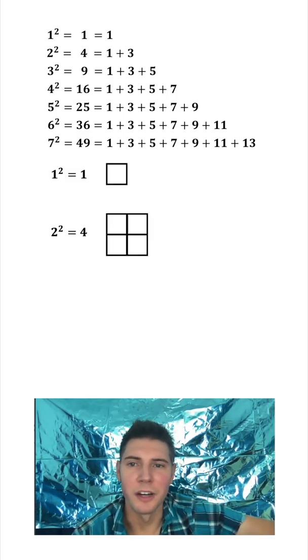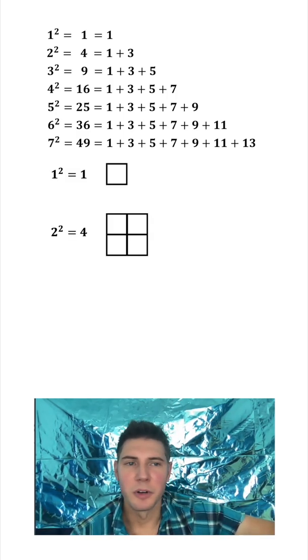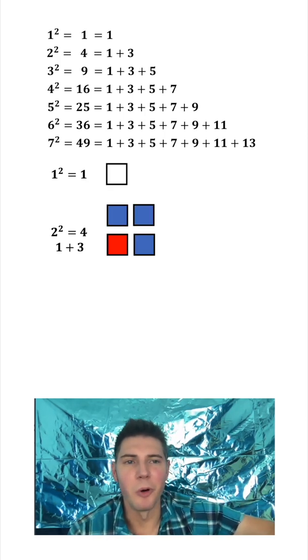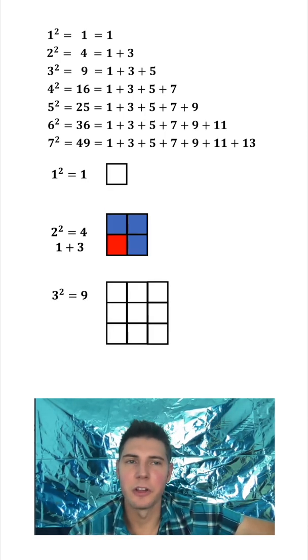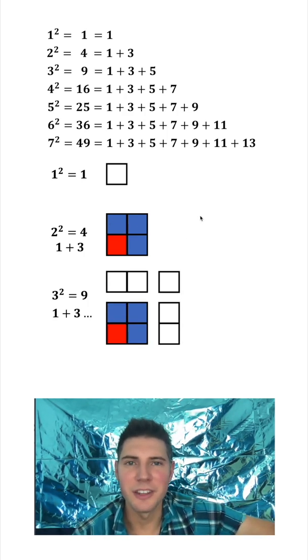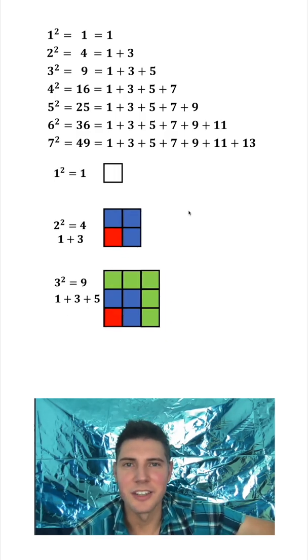We start with 1² and that's 1, and then 2² becomes 4. But if we break this out, 2² is made up of the original 1 plus 3 more, and that's why it's 1 + 3. If we look at 3², we have the original 1 plus 3 from the one before and we're going to add to it these 5 outside here. That's how we get to the 9.